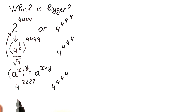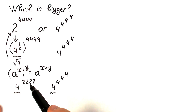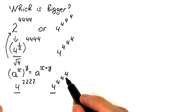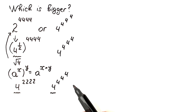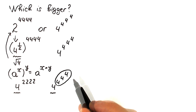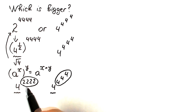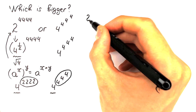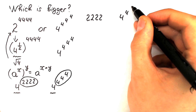Now both sides have base 4. We need to compare the exponents: on the left-hand side we have 2222, and on the right-hand side we have 4^(4^4). Because a bigger exponent means a bigger value, we need to determine which of these two powers is greater.